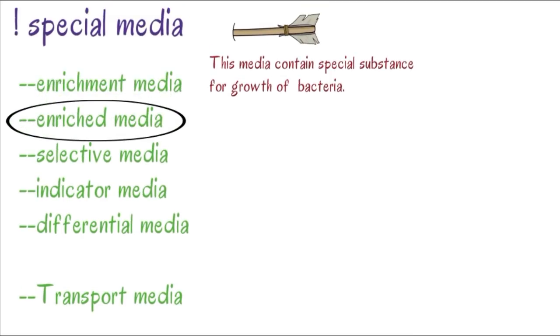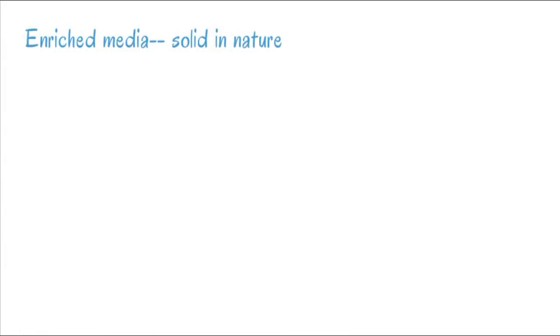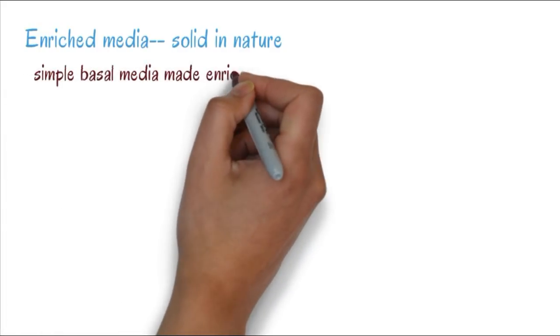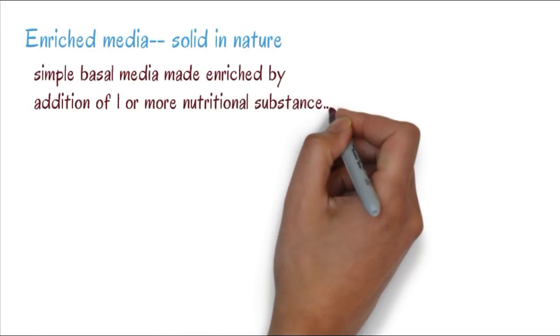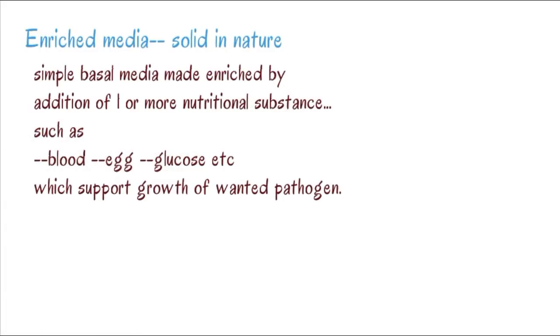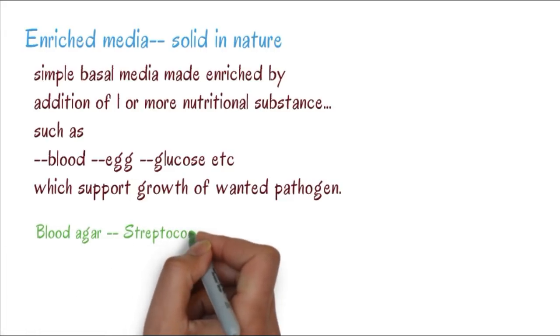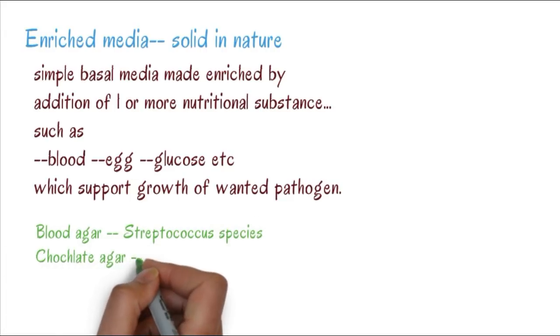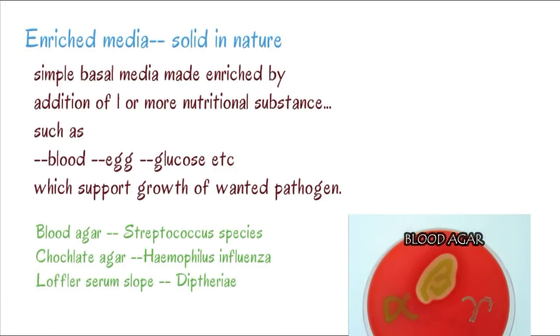Enriched media is basically solid in nature. In simple media, if we add enriched substances or additional nutrients, it becomes enriched media such as blood, egg, or glucose to support the growth of wanted pathogens. Examples: blood agar for Streptococcus species, chocolate agar for Haemophilus influenzae, and Loeffler's media is selective for diphtheria.